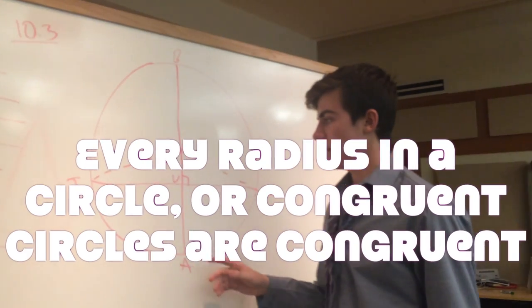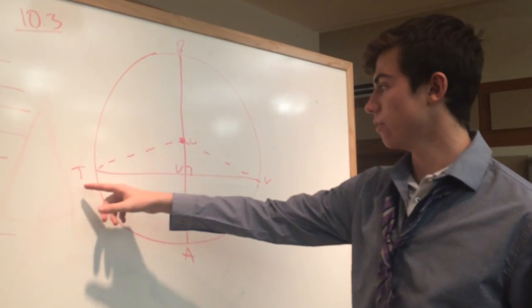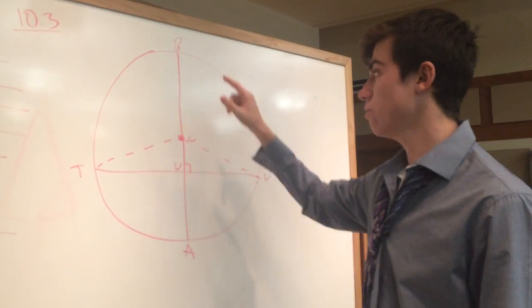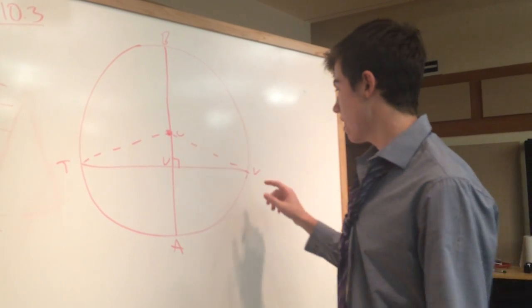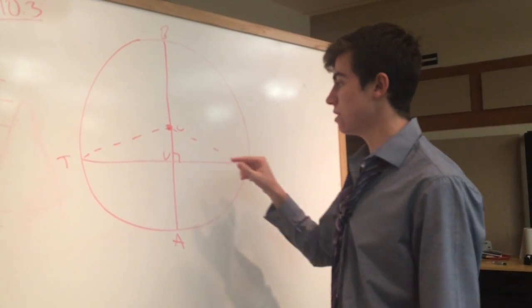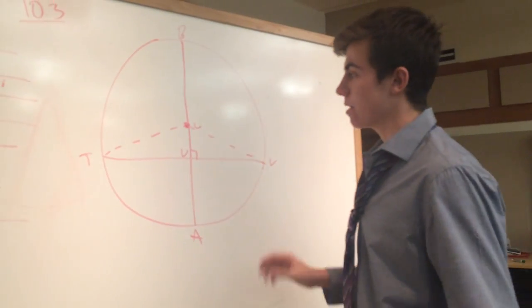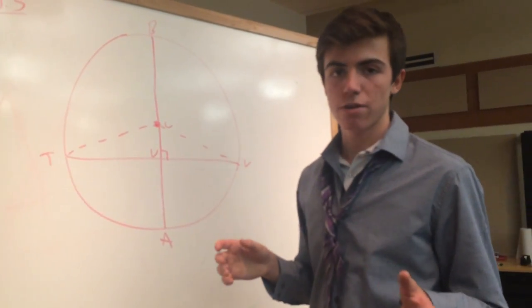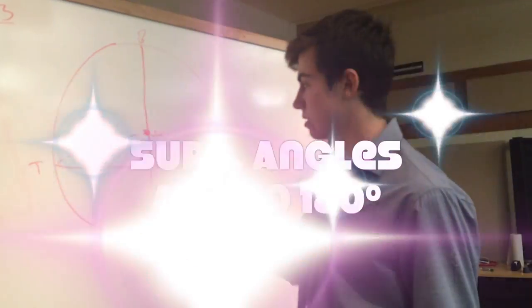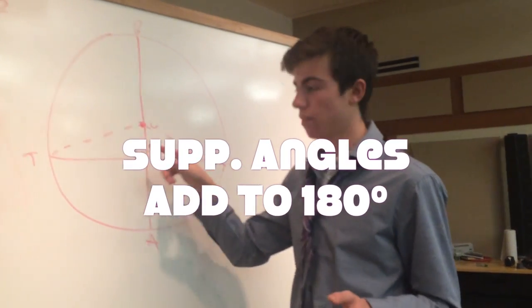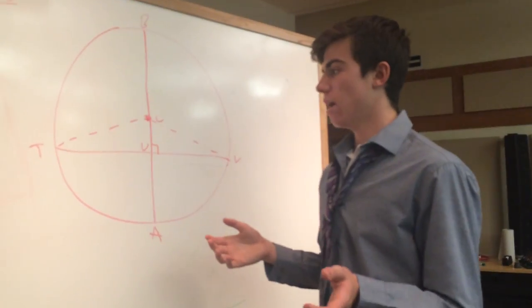Next, I said that the measure of angle TUB is the same as the measure of angle VUB because that's the definition of supplementary angles - if there's 90 degrees on this side, then there's 90 degrees on that side.